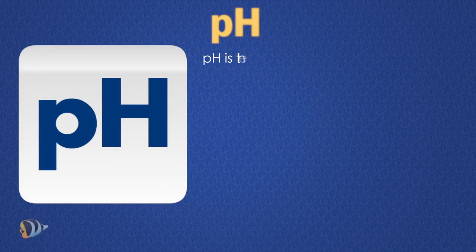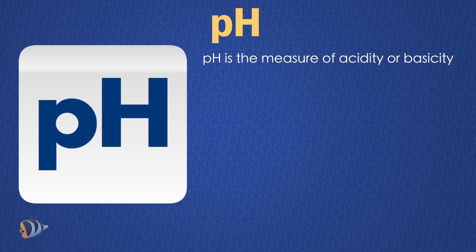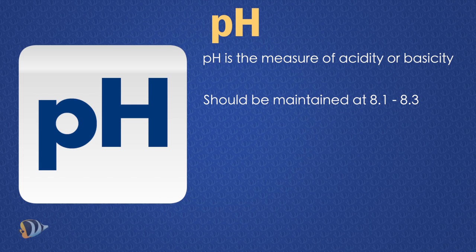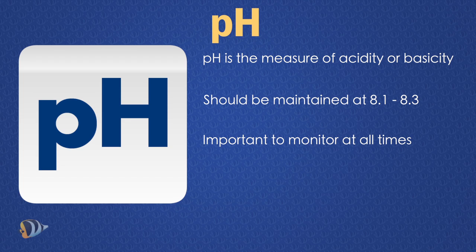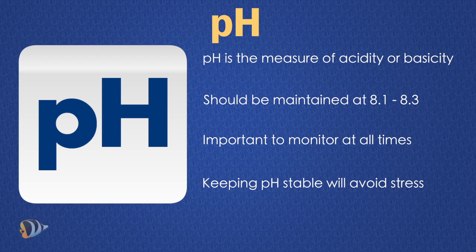pH is the measure of acidity or basicity in your aquarium water. Fish and coral can fall ill or even perish if your aquarium pH falls outside the acceptable range. A tank's pH can be affected by a range of factors and should therefore be monitored at all times. Stability is the key word with pH because large swings in pH can really stress out your aquarium inhabitants.